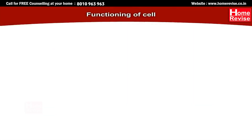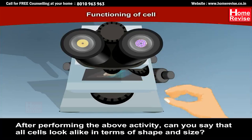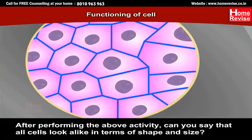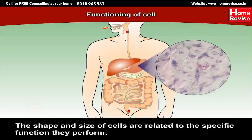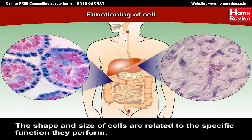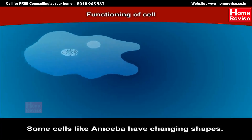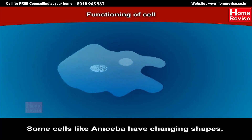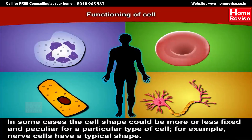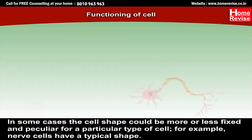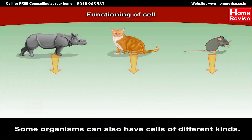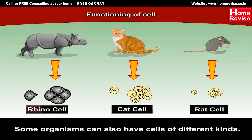After performing the above activity, can you say that all cells look alike in terms of shape and size? The shape and size of cells are related to the specific function they perform. Some cells, like amoeba, have changing shapes. In some cases, the cell shape could be more or less fixed and peculiar for a particular type of cell — for example, nerve cells have a typical shape. Some organisms can also have cells of different kinds.